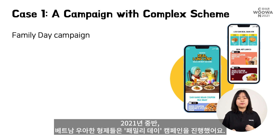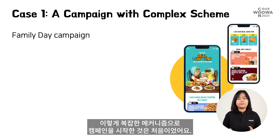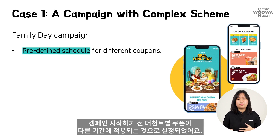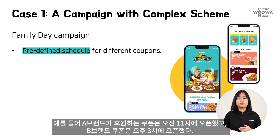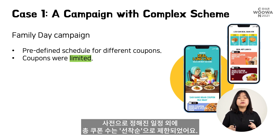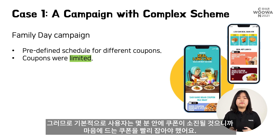To better grasp this situation, let's look at an actual campaign we ran a few months ago. In the middle of 2021, World Brothers Vietnam conducted a campaign called Family Day — the first time we ran a campaign with such a complicated mechanism. Coupons from different merchants were available for claiming at different time frames. For example, coupons sponsored by brand A were open at 11 am, while coupons by brand B were available only at 3 pm. In other words, coupons were not visible outside of their designated time frame. The total number of coupons was also limited — first come, first served — so users had to be very quick to grab the coupon they liked, as it would run out in just minutes.